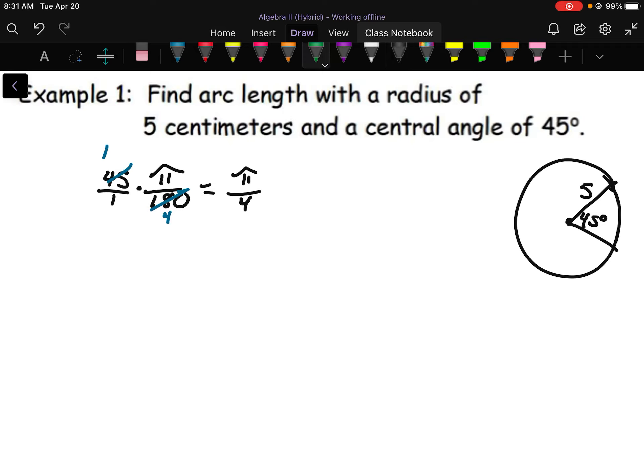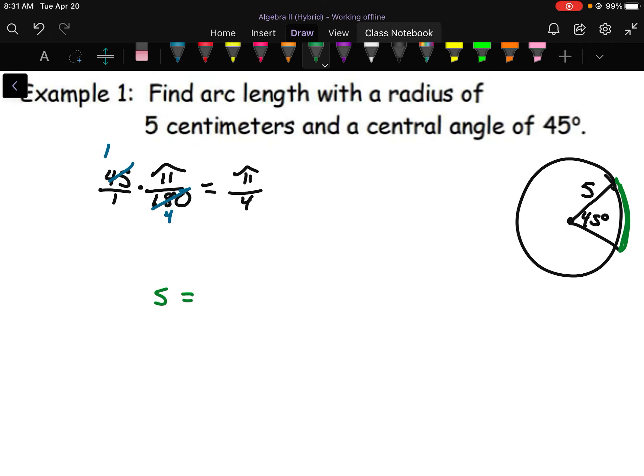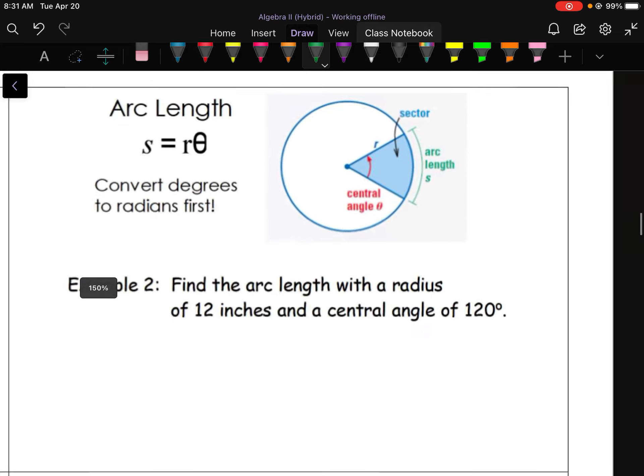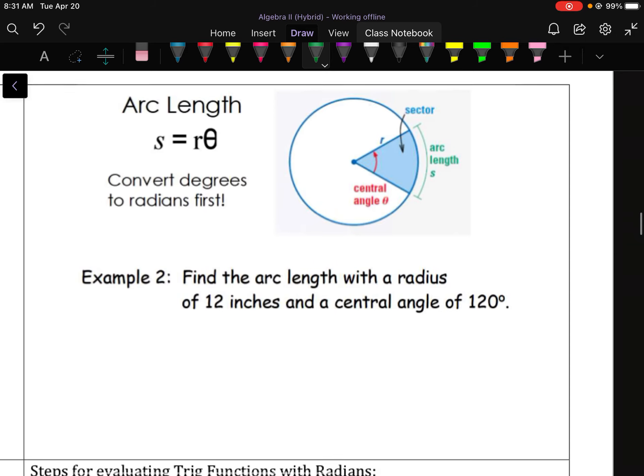So then if you want to find your arc length, that would be like the distance from here to here. We call that S. We take our radius times the angle measure in radians, π over 4. 5 times π over 4 is 5π over 4. And that's basically it.